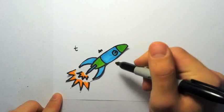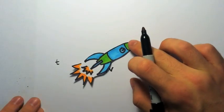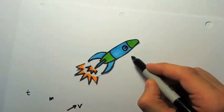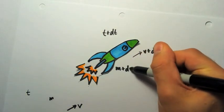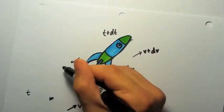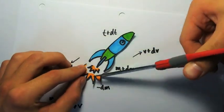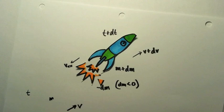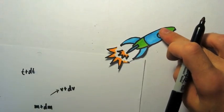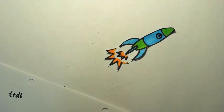What we're going to do is look at two different times. At time t, it has mass m traveling at speed v, and then at a later time t plus dt, it's traveling at speed v plus dv, has mass m plus dm, has ejected mass minus dm at speed v exhaust, and dm is less than zero so that it makes mathematical sense.